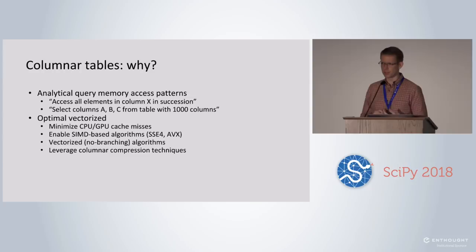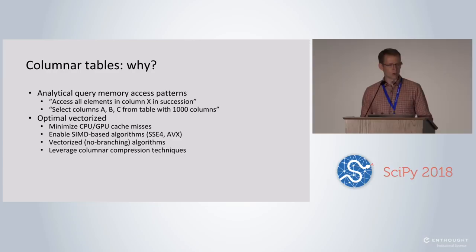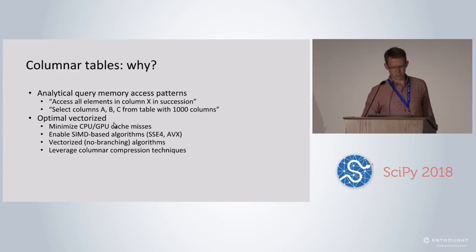The reason we care about column orientation is the memory access patterns of running queries. They often look like: I want to perform an operation for every element in a column of a data frame. Or maybe you have a really wide table and you're performing an operation that only involves a few of the columns. Column orientation means you only need to visit the columns relevant to your analysis, and when you do access all the values in a column, they're all next to each other in memory.